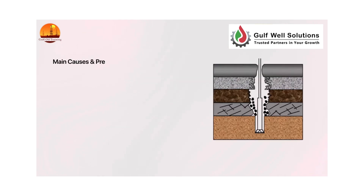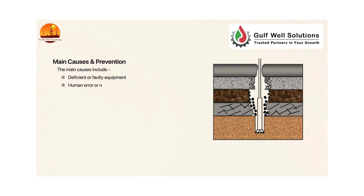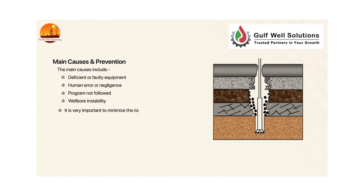Main causes and prevention. The main causes include deficient or faulty equipment, human error or negligence, program not followed, and wellbore instability. It is very important to minimize the risk of fishing by preventive actions towards the equipment.